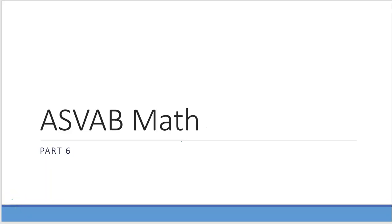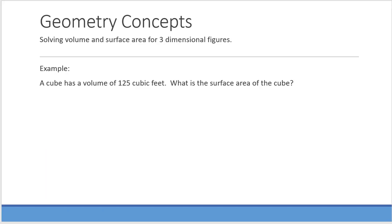Welcome to ASVAB math review part 6. We're going to look at some geometry concepts. The first thing we're going to talk about is solving volume and surface area in three-dimensional figures. A cube has a volume of 125 cubic feet — what is the surface area of the cube?